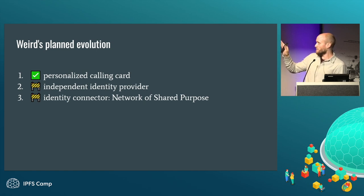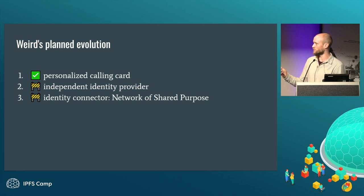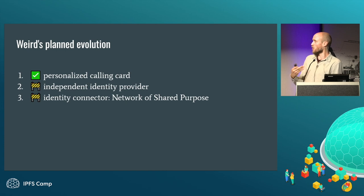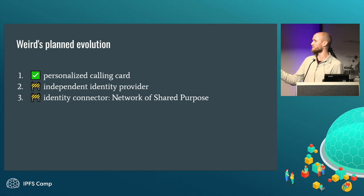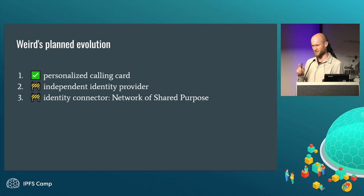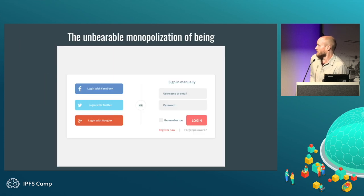This is our longer-term plan for what WEIRD should be capable of in order to give you the agency we're really looking for. We're happy enough with the first stage of letting you create your own little calling card. Second, we want your website to also act as your own identity provider. And lastly, we want a way for these identities — which can be spread across many different spaces since people should be able to self-host this — to connect together into what we call a network of shared purpose.